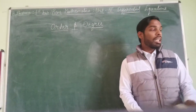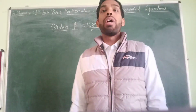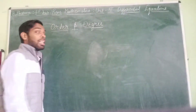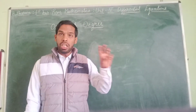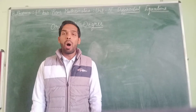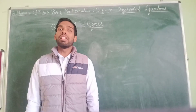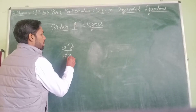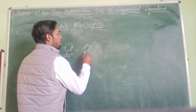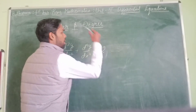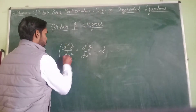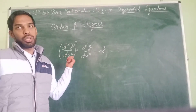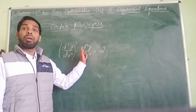The next topic in this chapter is order and degree of a differential equation. Order means the highest order of differentiation used in that equation. For example, consider d²y/dx² + d⁴y/dx⁴ = 2. Here d²y/dx² means double differentiation of y, and d⁴y/dx⁴ means the fourth-order derivative.